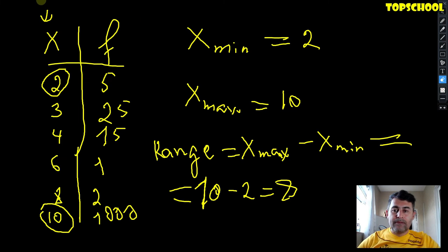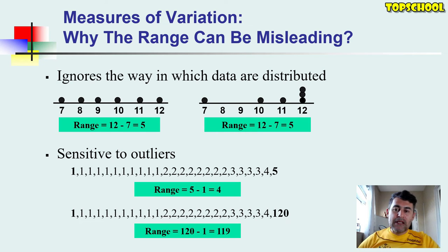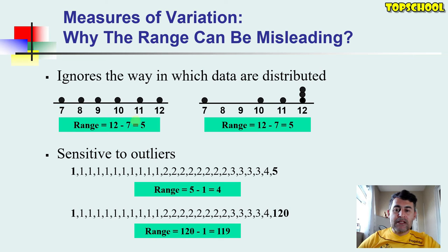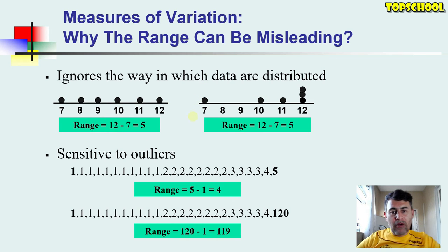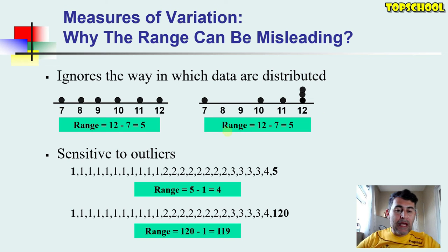Why can the range be misleading? The first reason is that it ignores the way in which data are distributed — we only look at the values, not the frequency. For instance, with data 7, 8, 9, 10, 11, 12, each with frequency one, the range is 5. In the second case with data 7, 10, 11, 12 — missing 8 and 9 — we still get the same range of 5.